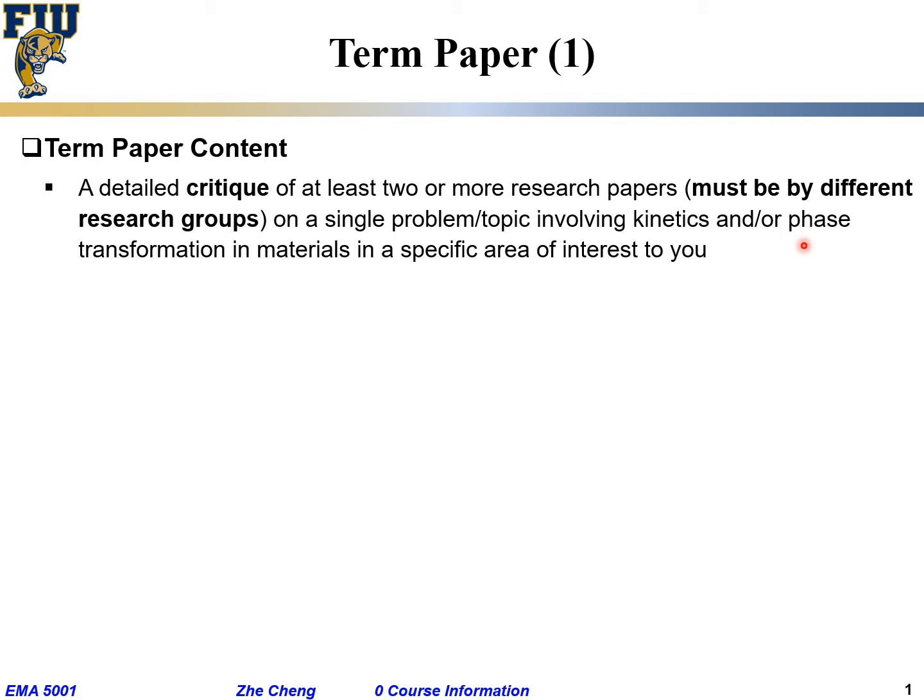That's what the term paper is about. Ideally, you choose a topic directly related to your own research — whether it's high entropy ceramics, solar cell material, optoelectronic material, lithium-ion battery, or polymers. But it has to be two papers on the same topic, from different groups, related to kinetics, diffusion, interface, or phase transformation — related to microstructure.